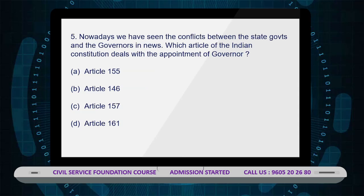The last question: Nowadays we have seen conflicts between state governments and governors in the news. Which article of the Indian Constitution deals with the appointment of the Governor? Option A: Article 155, Option B: Article 146, Option C: Article 157, Option D: Article 161. The correct answer is Option C — Article 157.